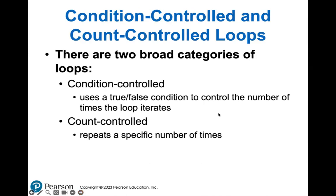There are two types of loops: condition control loops and count control loops. With condition control loops, think of decision structures - a loop running based on a true/false condition. While the condition is true, the loop iterates; once it turns false, the loop stops. Count control loops repeat a specific number of times when you know exactly how many iterations are needed. If you don't know, use the condition control loop.